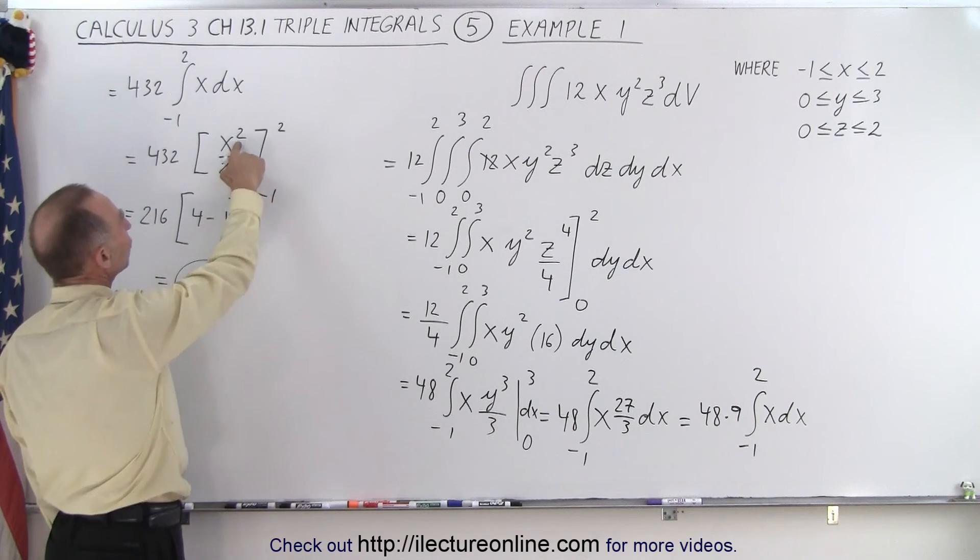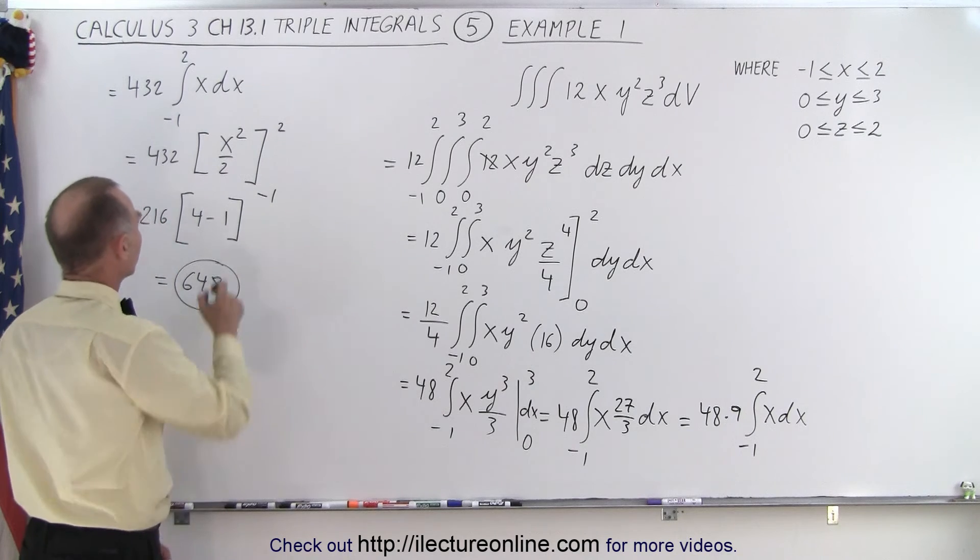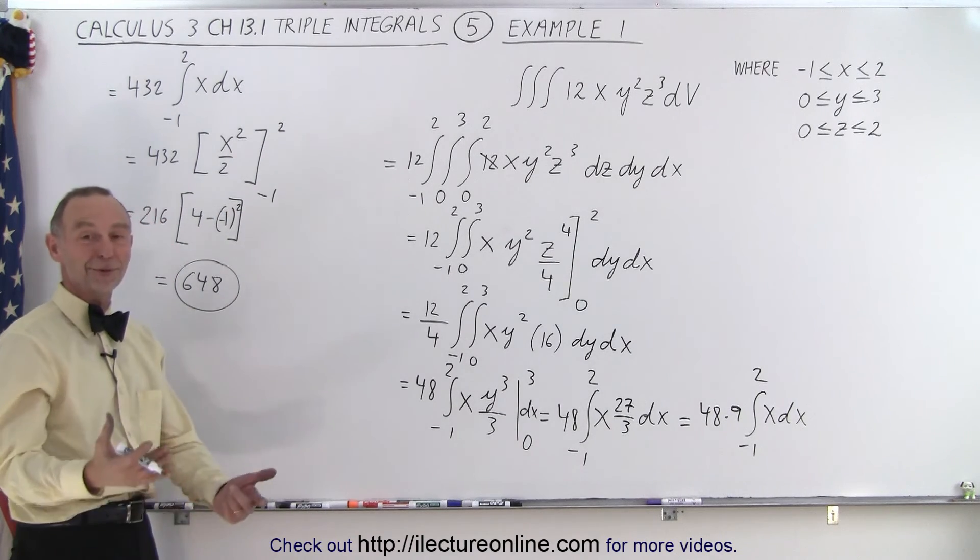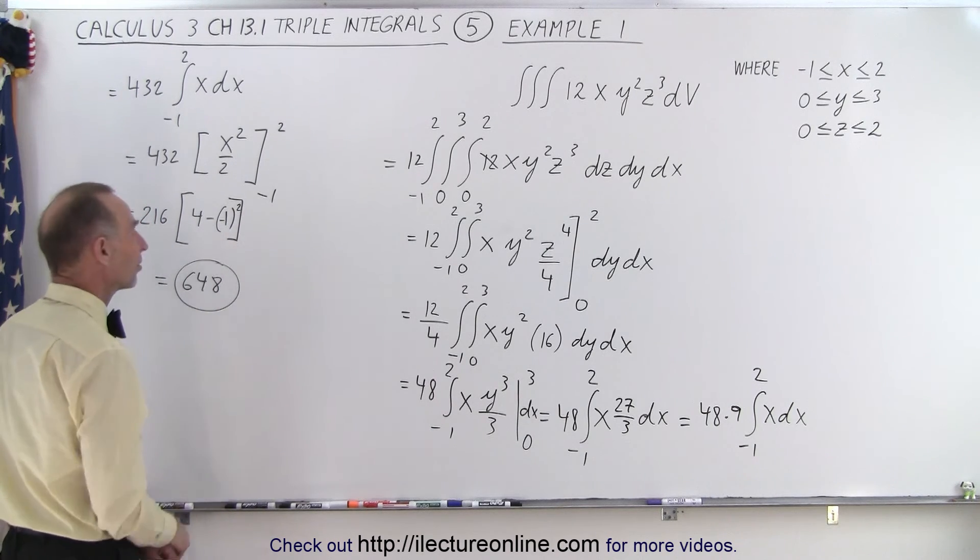So that's 3 times 216, that would be 648. Because when I square it I get a plus 1, so it's minus a plus 1 because it's 1², right? Therefore it's 4 minus 1 or 3. 3 times 216 is 648.